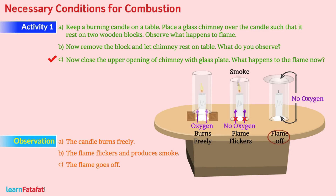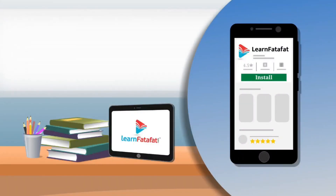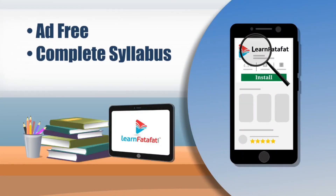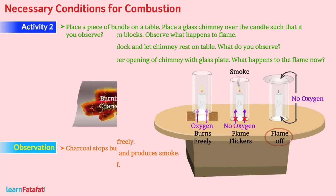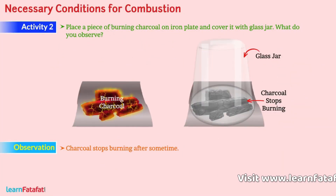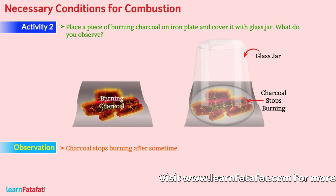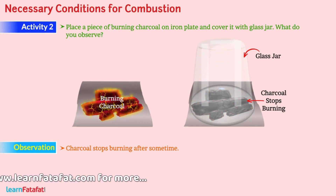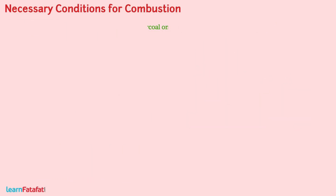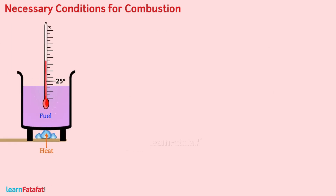The same can be deduced from the following activity. Here, charcoal uses the oxygen present in the jar for some time. Once the whole amount of oxygen gets consumed, it stops burning. Also, fuel needs to be heated to a certain temperature so that the substance could catch fire. This is the ignition temperature.